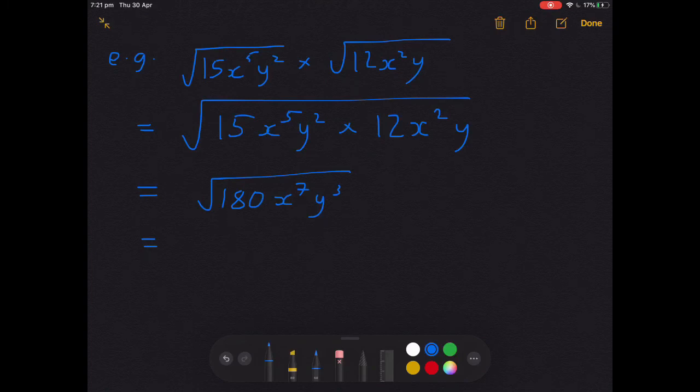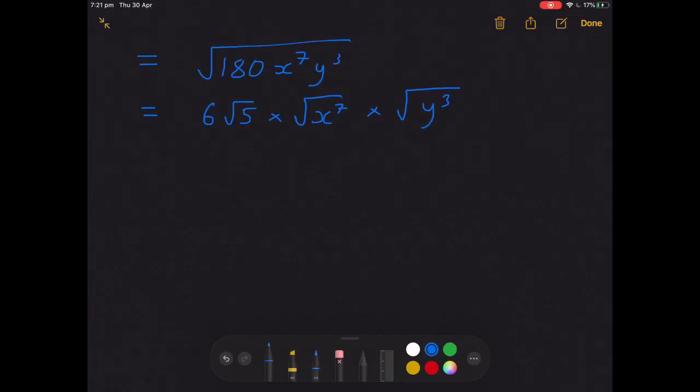Root 180, that was 6 root 5. That was from a previous example. And then we've got root x to the seventh and we've got root y cubed.